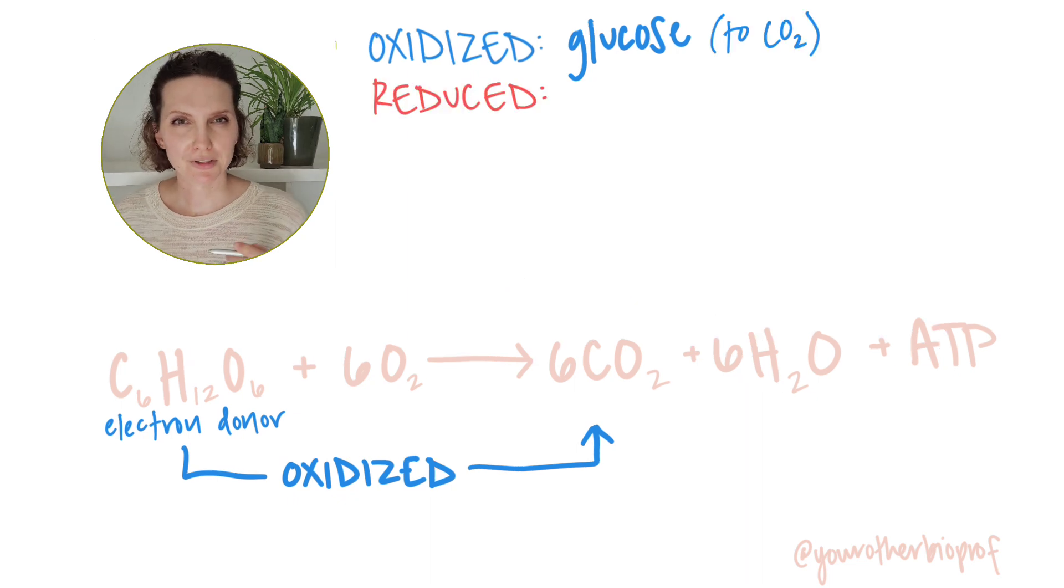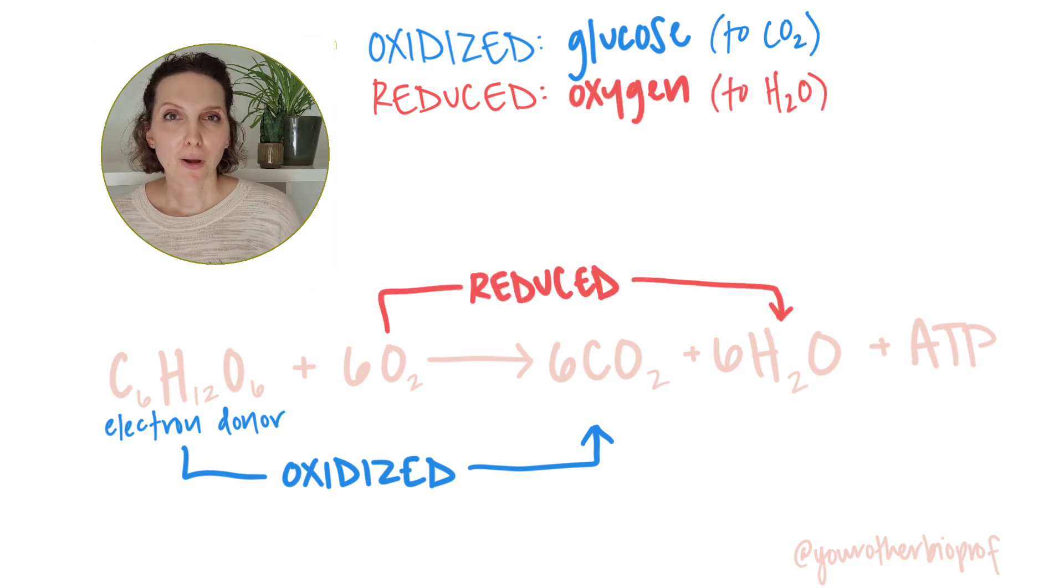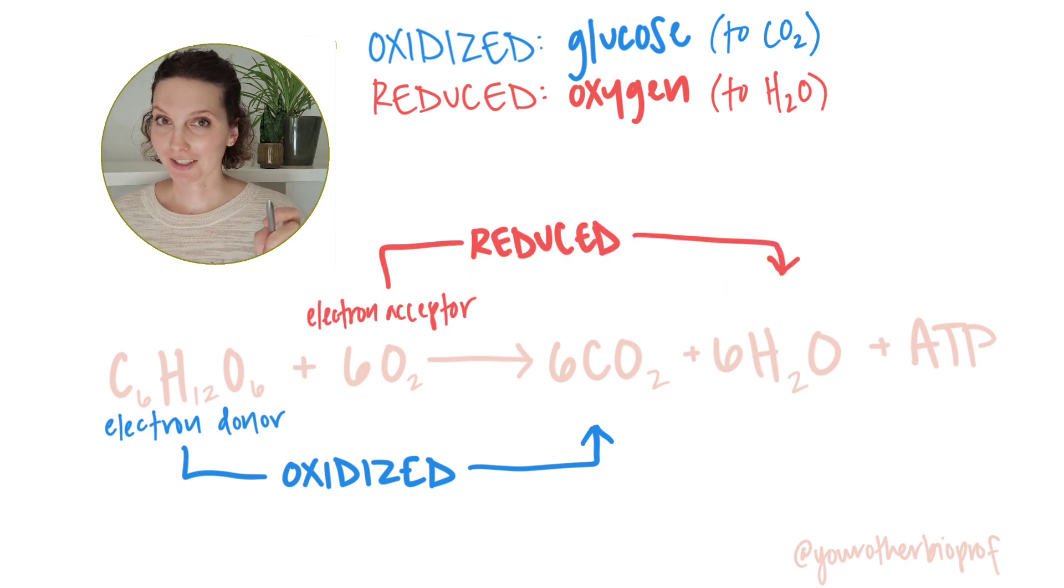Who is being reduced in this equation? The oxygen, right? Remember in cellular respiration, oxygen is the final electron acceptor. Electron acceptor. There's a clue. The final electron acceptor is oxygen at the end of the electron transport chain. So it's going to be reduced.